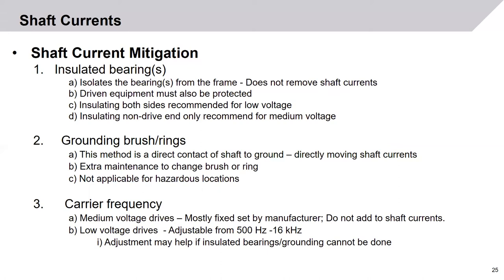The third method, which is really a last resort, is carrier frequency adjustment. This is mainly for low voltage drives. For medium voltage drives, the carrier frequency does not typically add to shaft currents, is set by the manufacturer, and cannot be changed. Low voltage drives can be adjusted from 500 hertz to 16 kilohertz. Again, this is a last resort, and carrier frequency should not be changed unless insulated bearings and/or shaft grounding cannot be done.